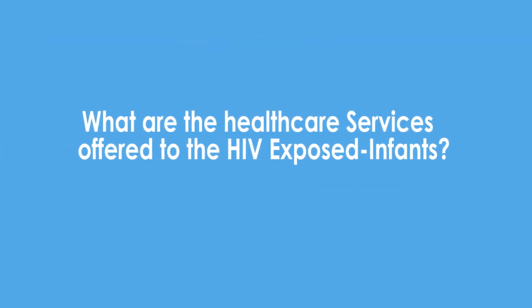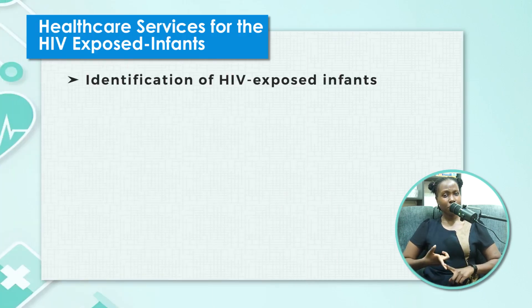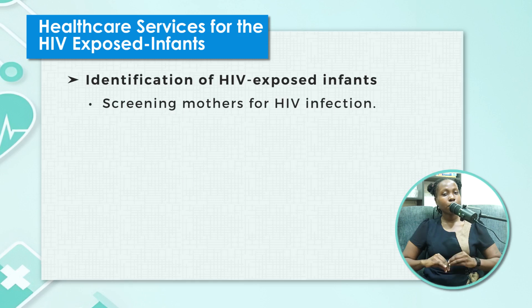What are some of the services we offer to these children exposed to HIV? The first and foremost is to identify infants who have been exposed. When mothers come to hospital for their antenatal services, we need to screen them for HIV infection. Some mothers get offended when asked to be screened, saying we already know their status. But realize this is for the protection of your unborn child — to prevent infection and get a better quality of life.